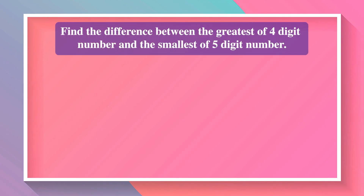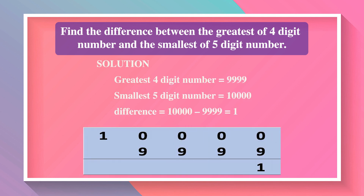Find the difference between the greatest 4-digit number and the smallest 5-digit number. The greatest 4-digit number is 9,999 and the smallest 5-digit number is 10,000. Their difference is 10,000 − 9,999 = 1.